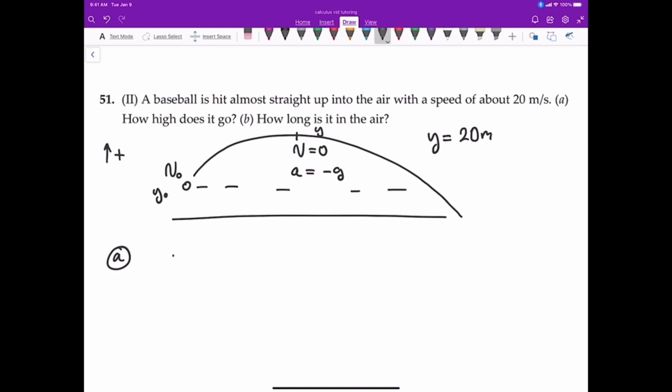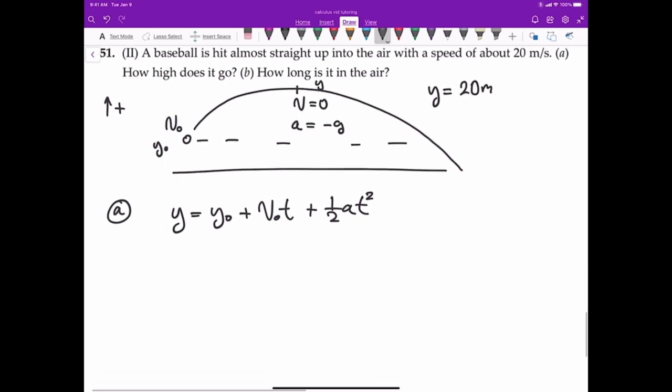If we use the equation: y equals y₀ plus initial velocity times t plus one-half the acceleration times t squared (this is equation 12b), what we're saying is that the displacement, the change in distance, is going to equal zero. We're coming from 20 meters high and then we travel another 20 meters down, so 20 meters minus 20 meters is zero. So this is going to go to zero.